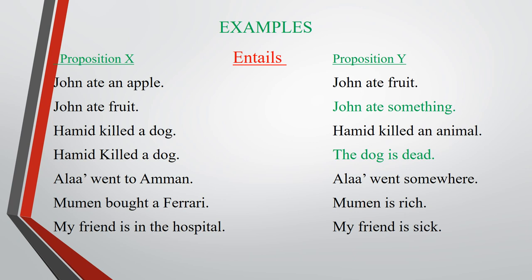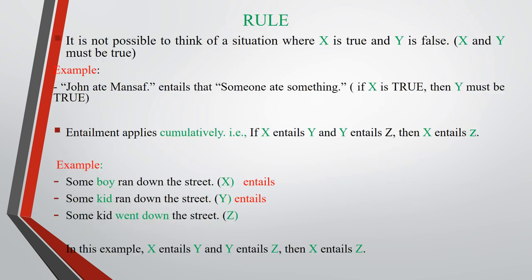'Mu'min bought a Ferrari' entails that 'Mu'min is rich.' 'My friend is in the hospital' entails that 'my friend is sick.' We can never think of a situation where X is true and Y is false — if X is true, then Y must be true. For example, if we say 'John ate something,' this sentence entails that someone ate something. If it is true that John ate it, then it is true that someone ate something.